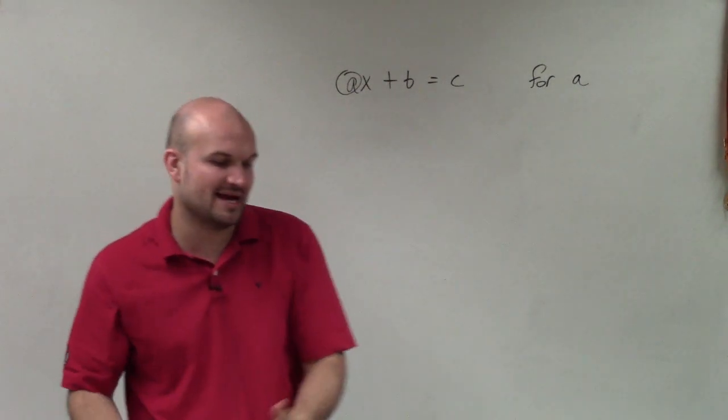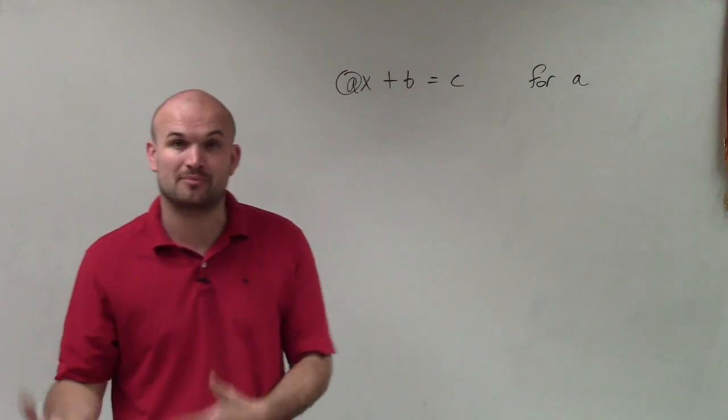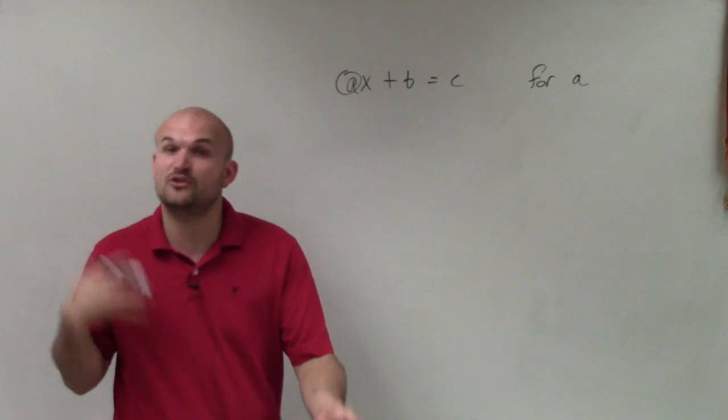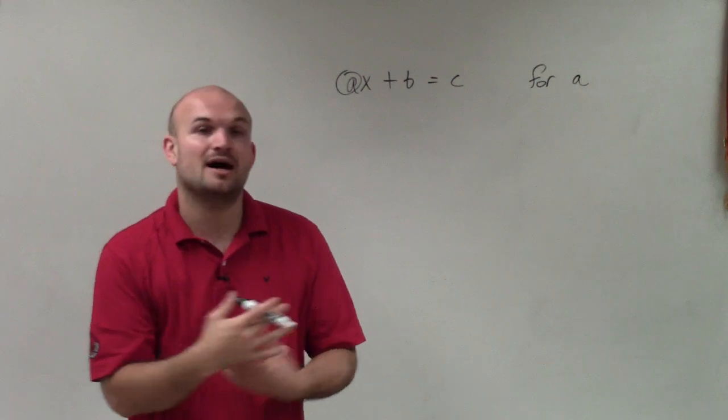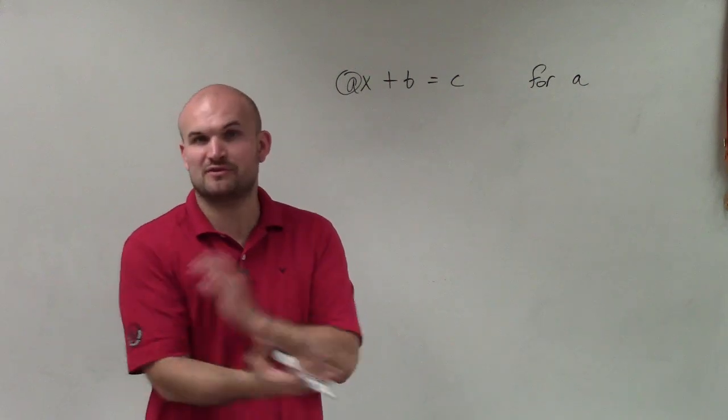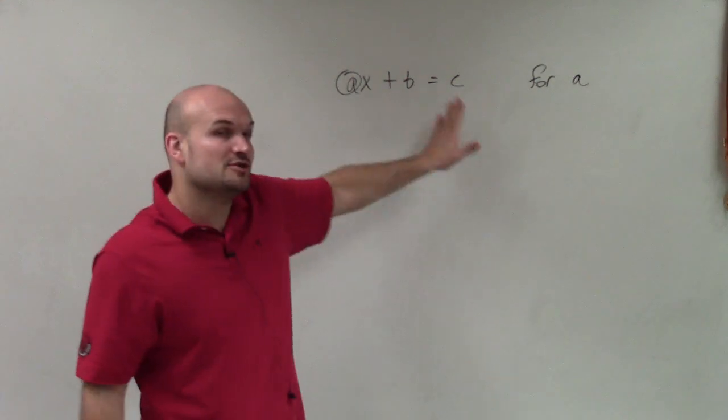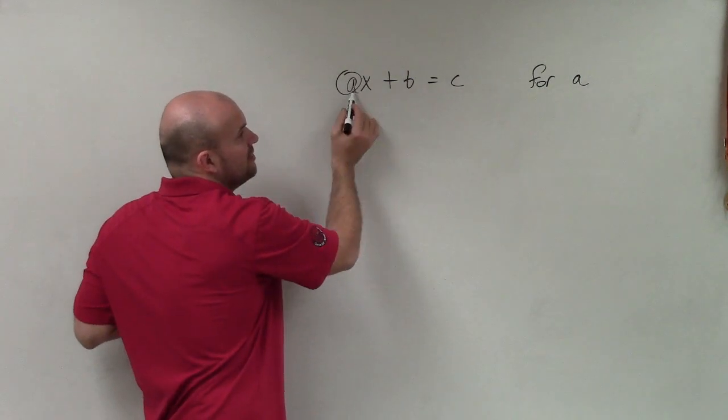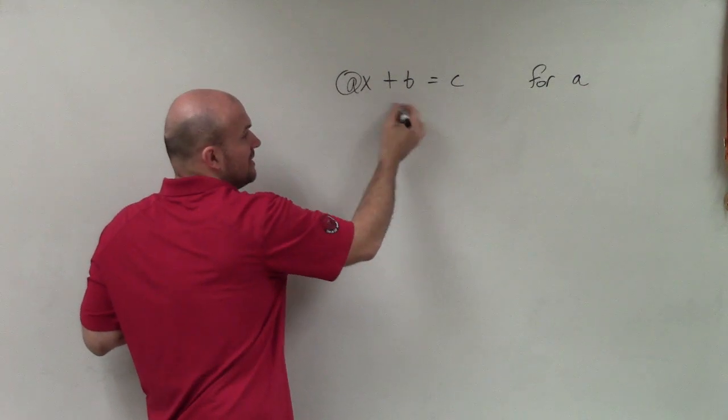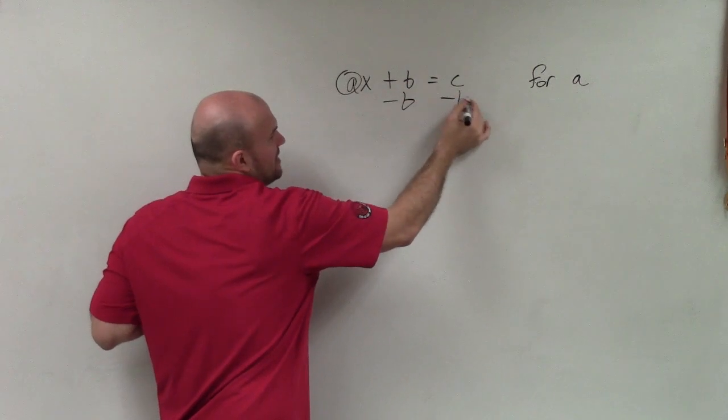So I need to undo those, but we've got to make sure we undo them in a certain order, which we call the reverse order of operations, which is like the order of operations but the reverse method, meaning I'm going to undo addition and subtraction first. So you can see that since my variable a is being added by b, I need to undo that by subtracting b.